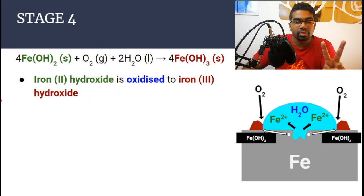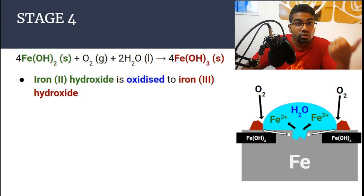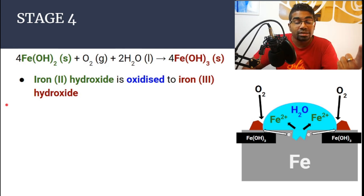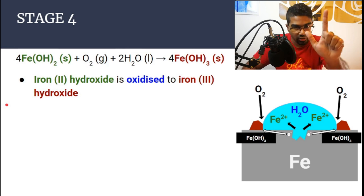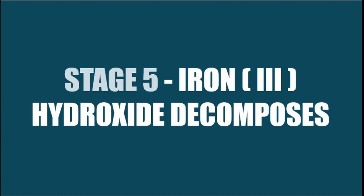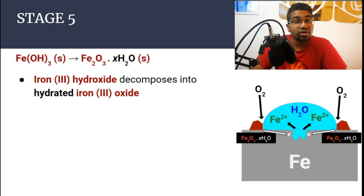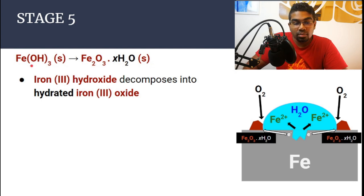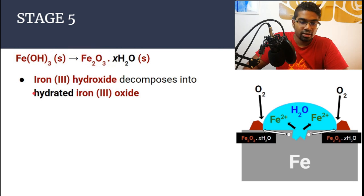So there are two oxidation processes that take place. The first stage: iron is oxidized to iron-2 ions. Then iron-2 hydroxide is oxidized to iron-3 hydroxide — that's the second oxidation process. We know that rust is hydrated iron-3 oxide, not iron-3 hydroxide. So the last stage is the decomposition of iron-3 hydroxide into hydrated iron-3 oxide.